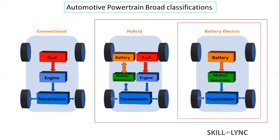The broad classification of automotive powertrains can be put simply: first is the conventional powertrain, which uses a gasoline or diesel engine powered by liquid fuel, where power from the engine goes through the transmission to the wheels. Hybrid is a powertrain that combines an electrical machine (motor) with an engine to deliver power to the wheels. The third is the battery electric vehicle (BEV), a pure electric powertrain where a motor produces power and transfers torque to the wheels through the transmission.